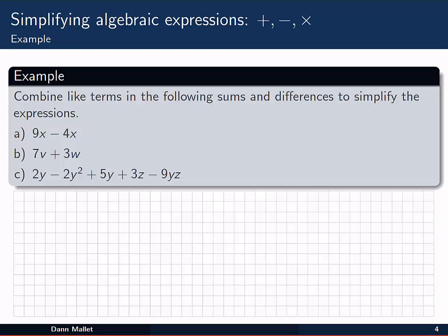Let's have a look at some examples. In this question we're asked to combine the like terms in the following sums and differences to simplify the expressions. Simplify just means make it as small as you can, reducing redundancies. So first of all we've got 9x minus 4x. If you're keen, try stopping the video now and have a go at this one yourself. Try out b and c as well, and then when you're finished come back and see how I go through this problem.